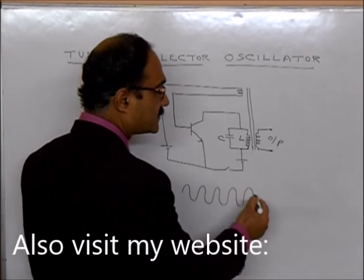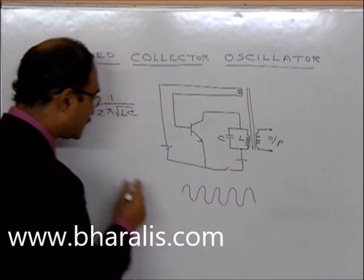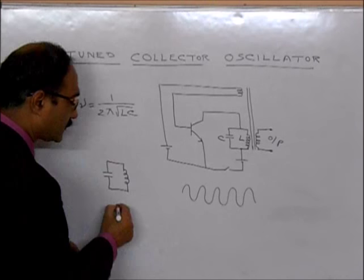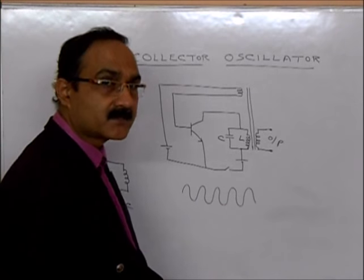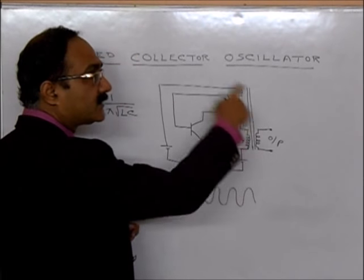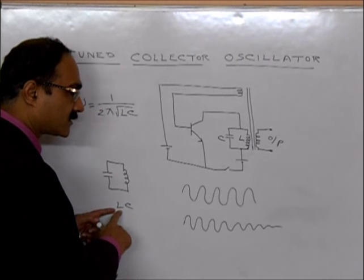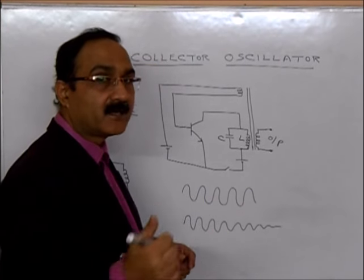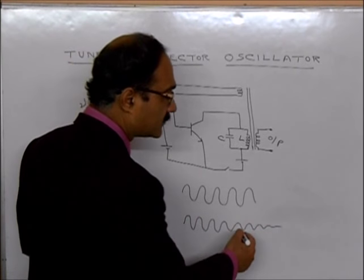A question may arise: why do we need such a complicated circuit? We have learned earlier that a capacitor and an inductor connected in parallel — an LC oscillator — can also produce this type of wave. The answer is: though a simple LC circuit can theoretically produce a constant-amplitude wave, in practice, in real life, the amplitude will keep decreasing and eventually the wave will die out.